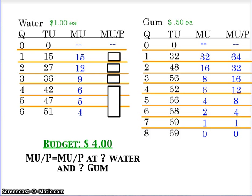This is the part two video to utility, and what we're going to do is see how we can turn this analysis — marginal utility over price equals marginal utility over price — into a demand curve. Ultimately, this whole assessment of utility maximization is to see what's behind a demand curve, digging in deeper.